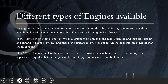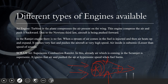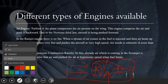A jet engine is present in your normal plane. When the turbine in the plane compresses the air entering the engine on the wing, it compresses the air and pushes it backward. Due to Newton's third law, the aircraft is pushed forward. That is the normal jet engine.